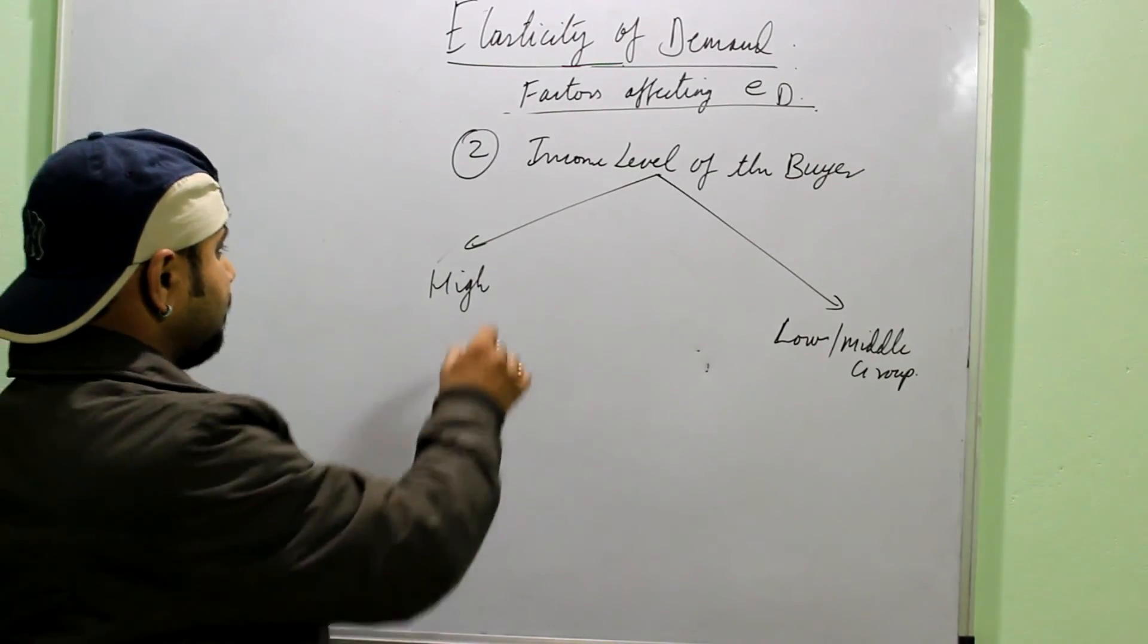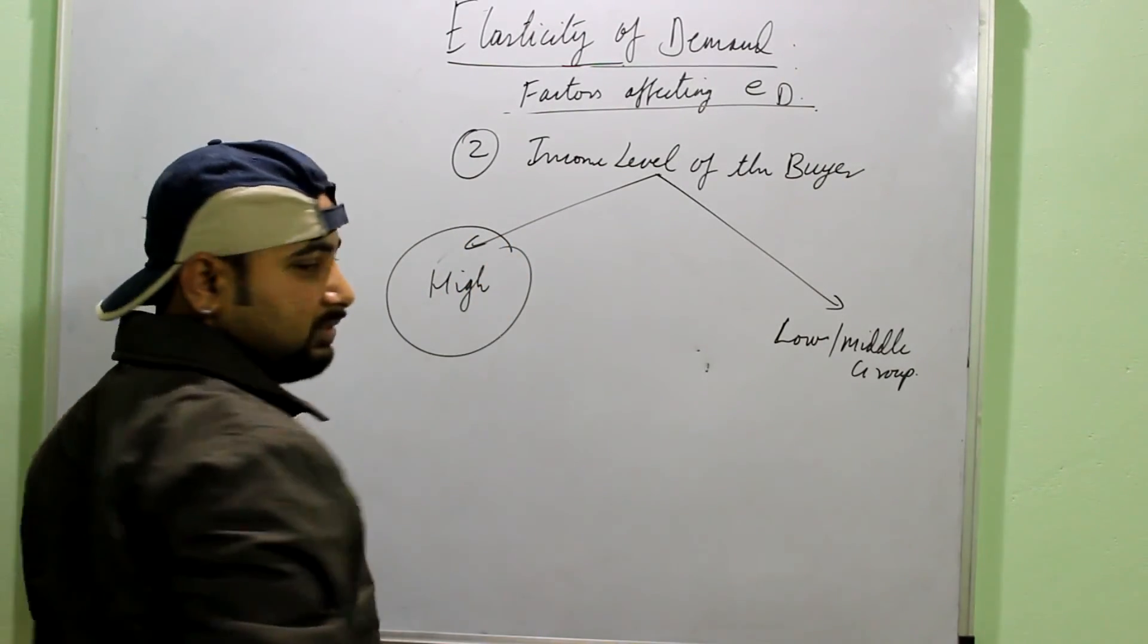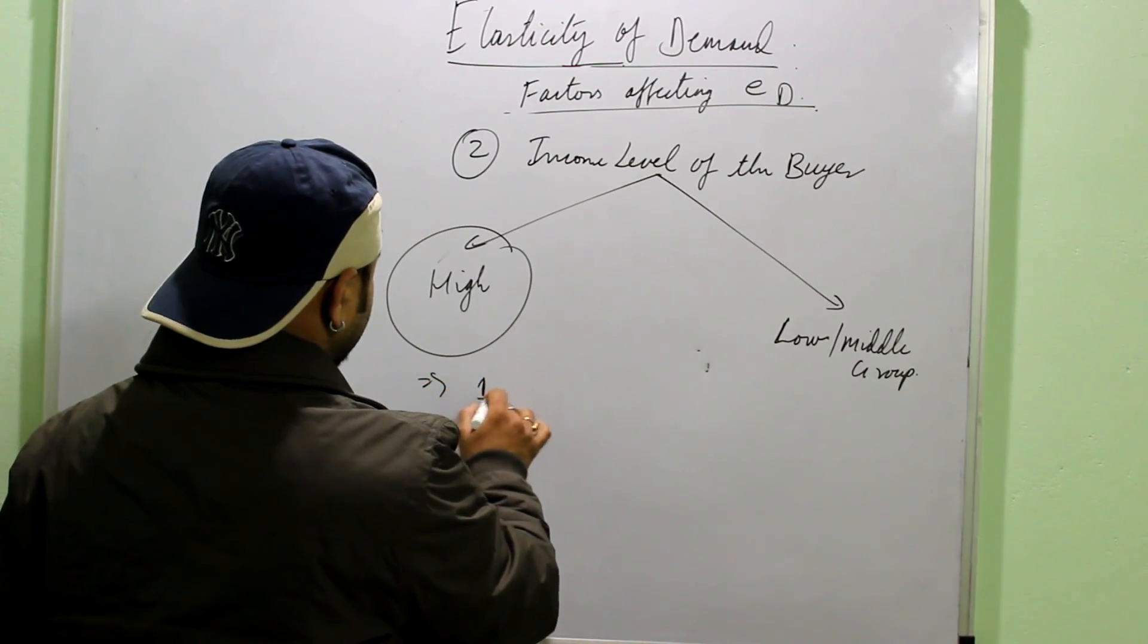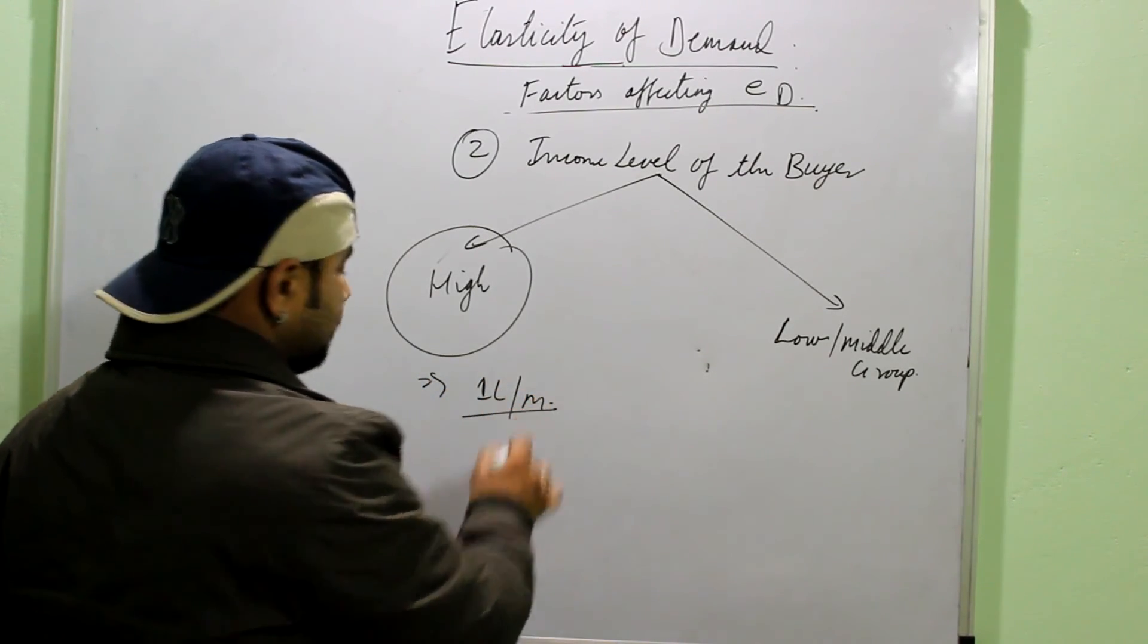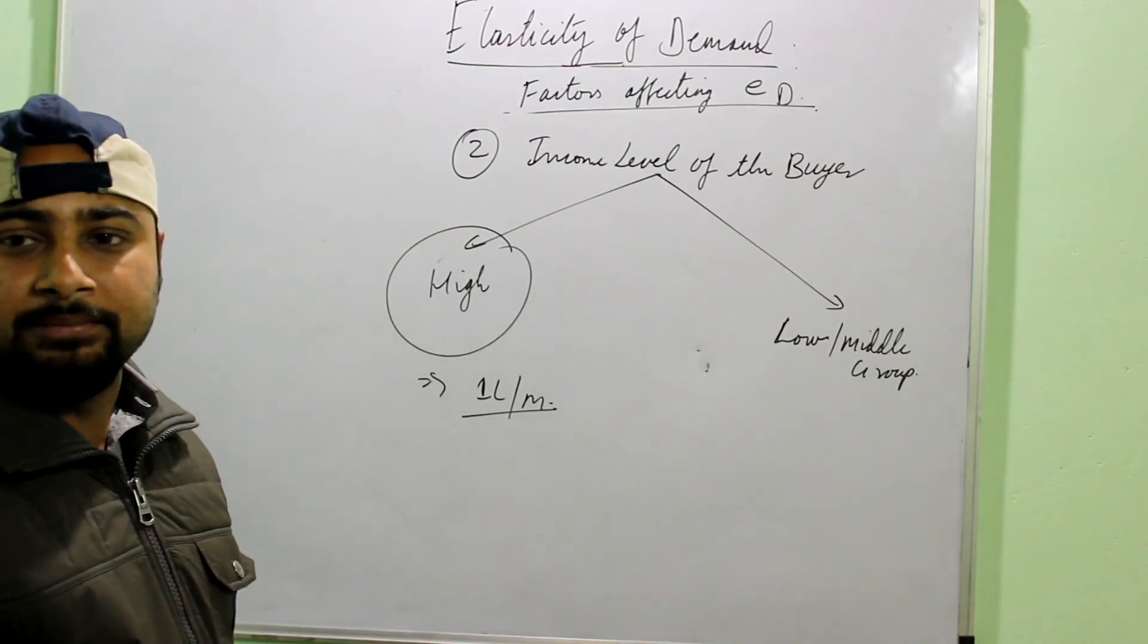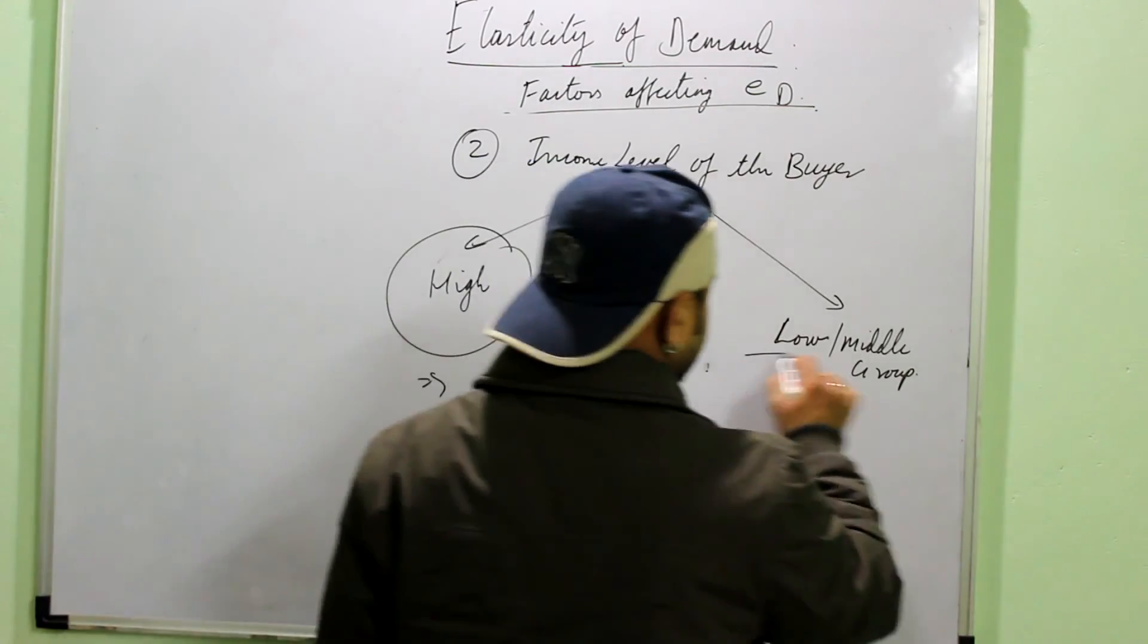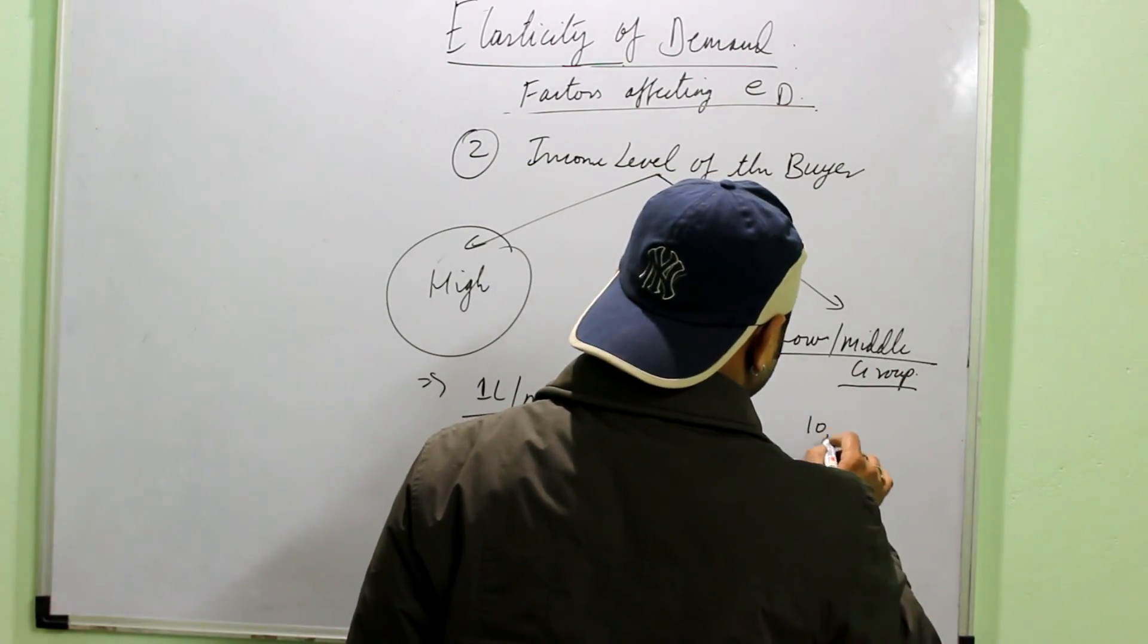If the person is belonging to a high income group. Maybe say income is very high. Say 1 lakh per month. Then, small changes in price will not affect him. But if a person is belonging to the low or middle income group. Say 10 lakh per month. Then, the changes in the price.